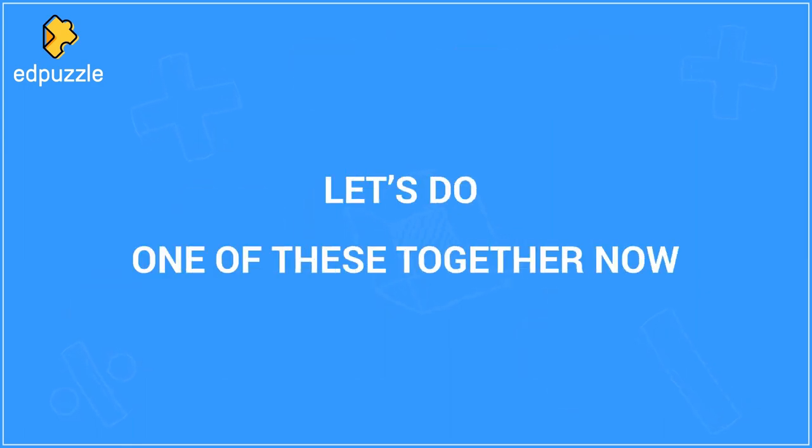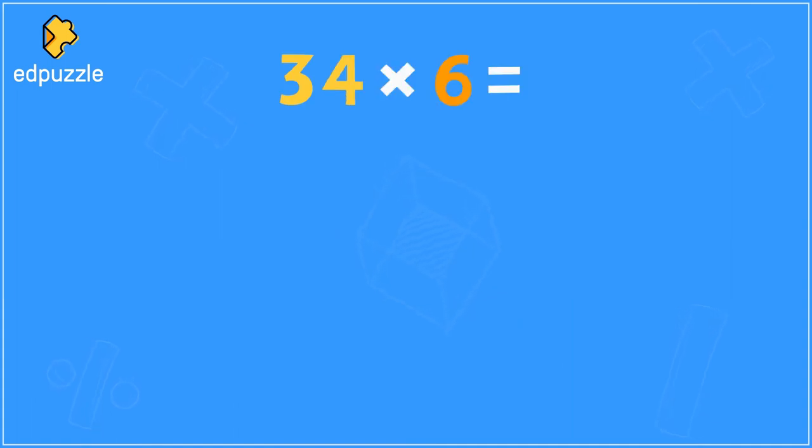Let's do one of these together now. We're going to use an area model to multiply 34 times 6. Again, this area model will start with a box that will separate into two pieces because we're multiplying by a two-digit number. Now I need to split up 34. How should I split up 34?